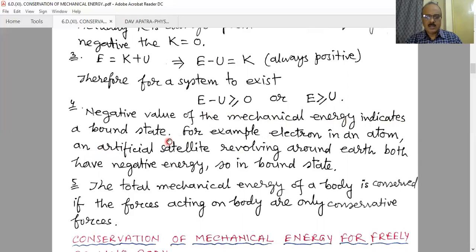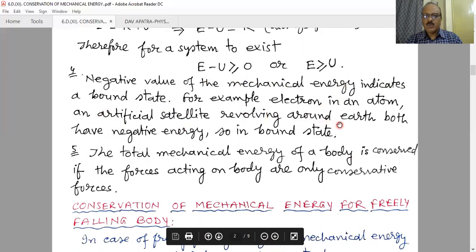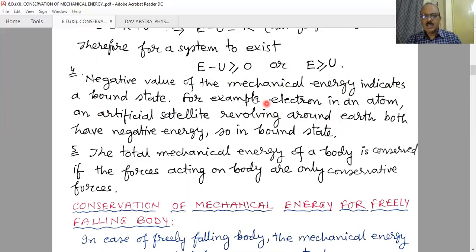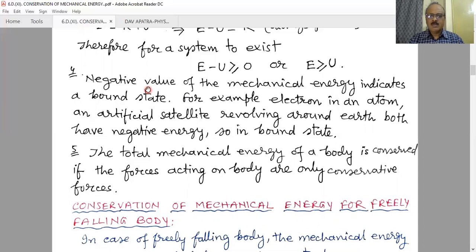A negative value of mechanical energy indicates a bound state. For example, an electron in an atom and an artificial satellite revolving around the Earth both have negative energy — they are in a bound state. This is possible when the magnitude of the negative potential energy exceeds the kinetic energy. A system which possesses total mechanical energy as negative energy is known as a bounded system. The electron is bounded to the nucleus within the atom, meaning it requires that amount of energy to escape from the system.